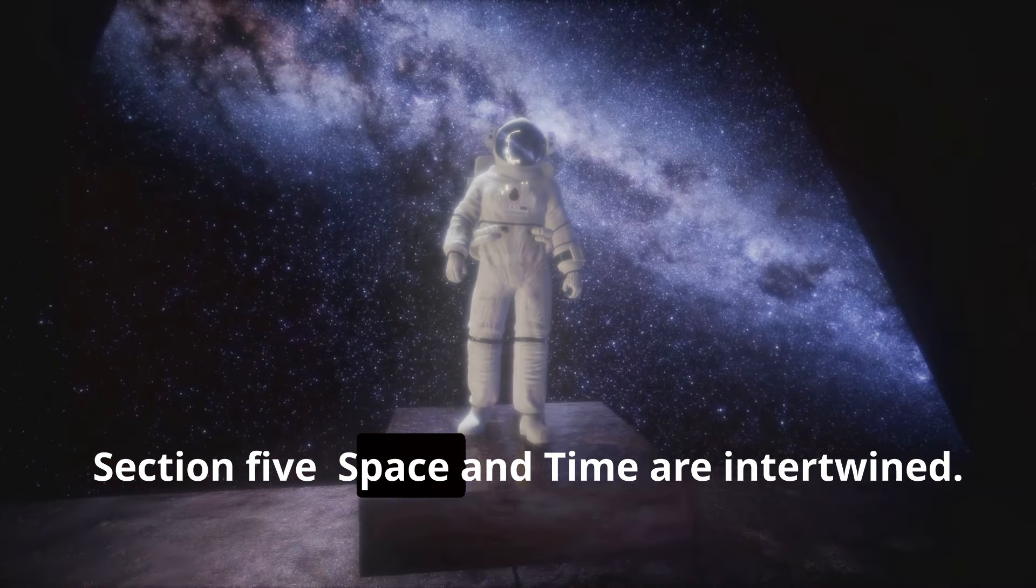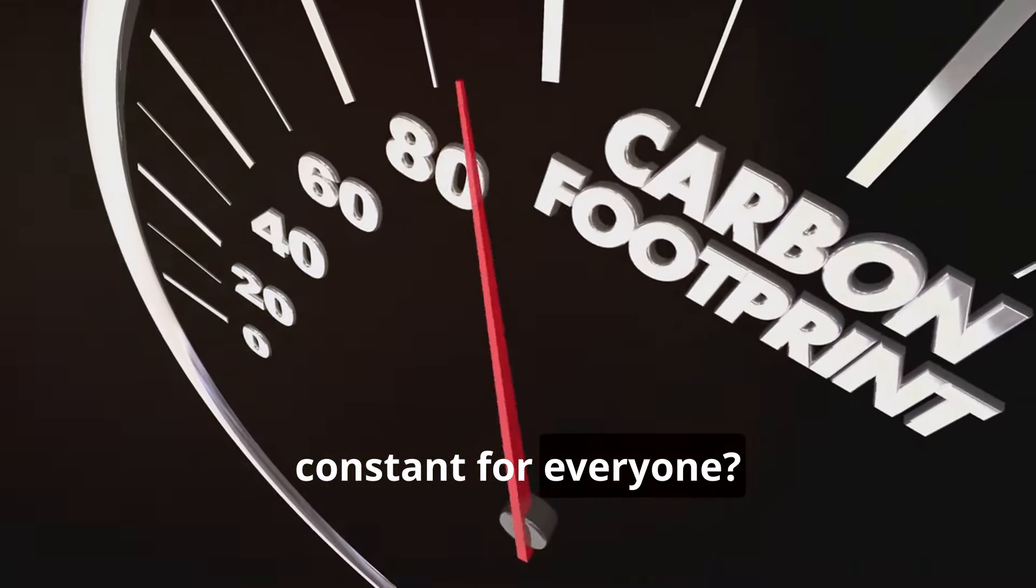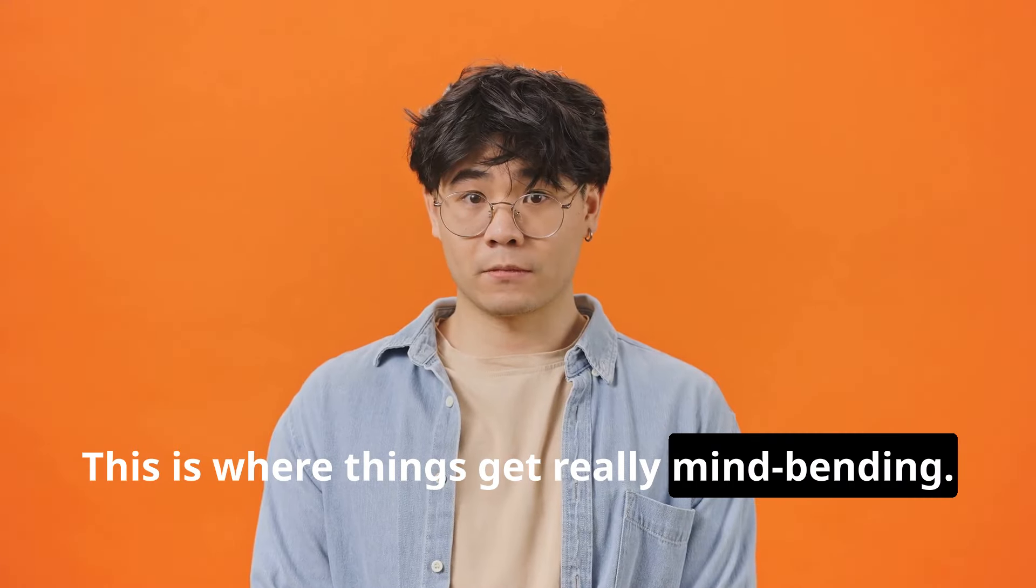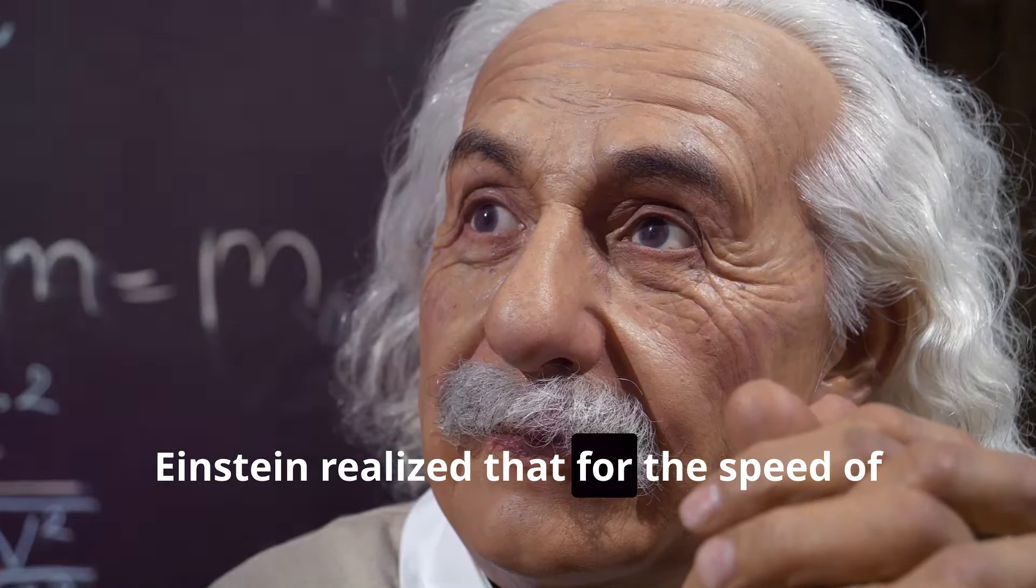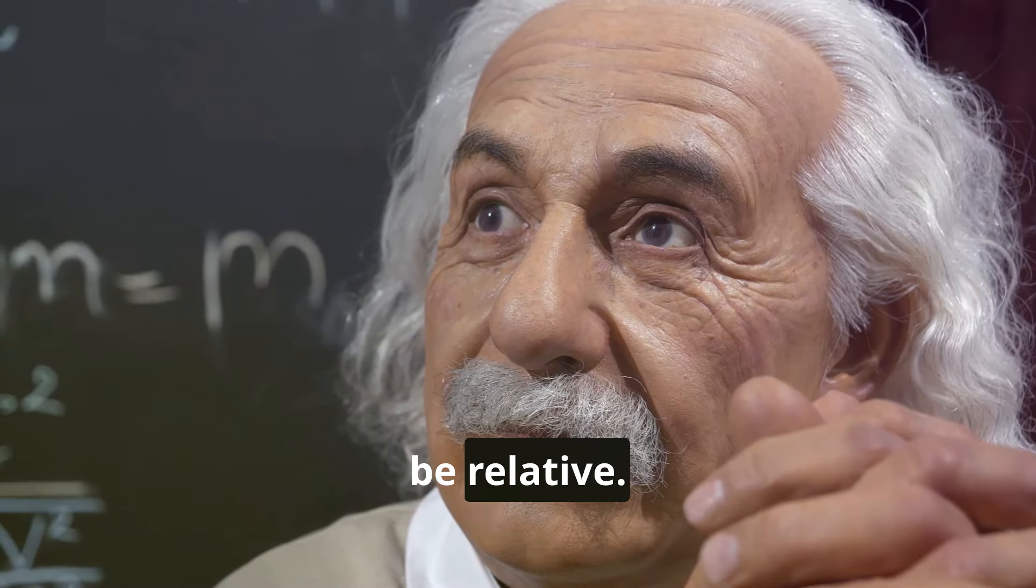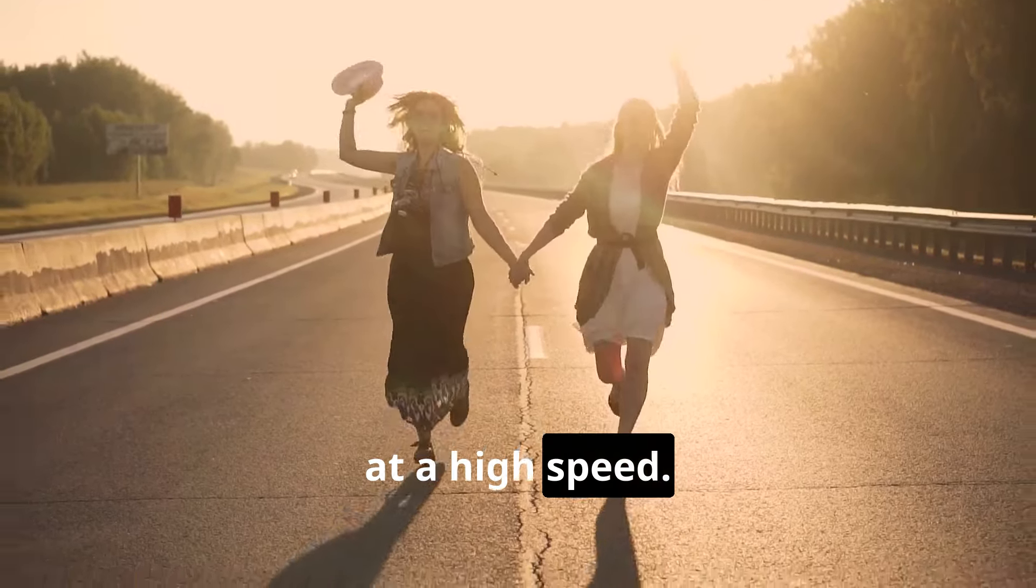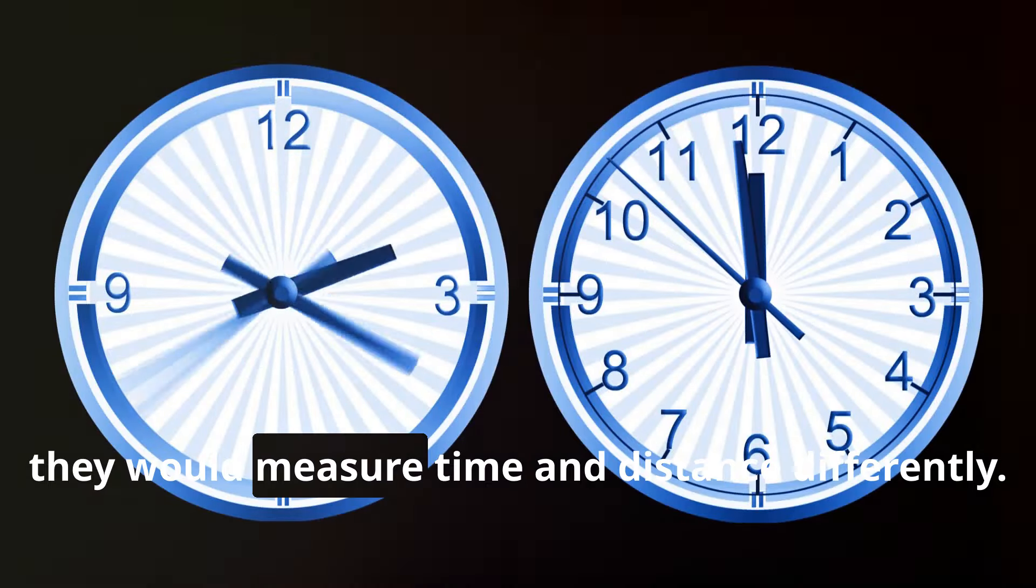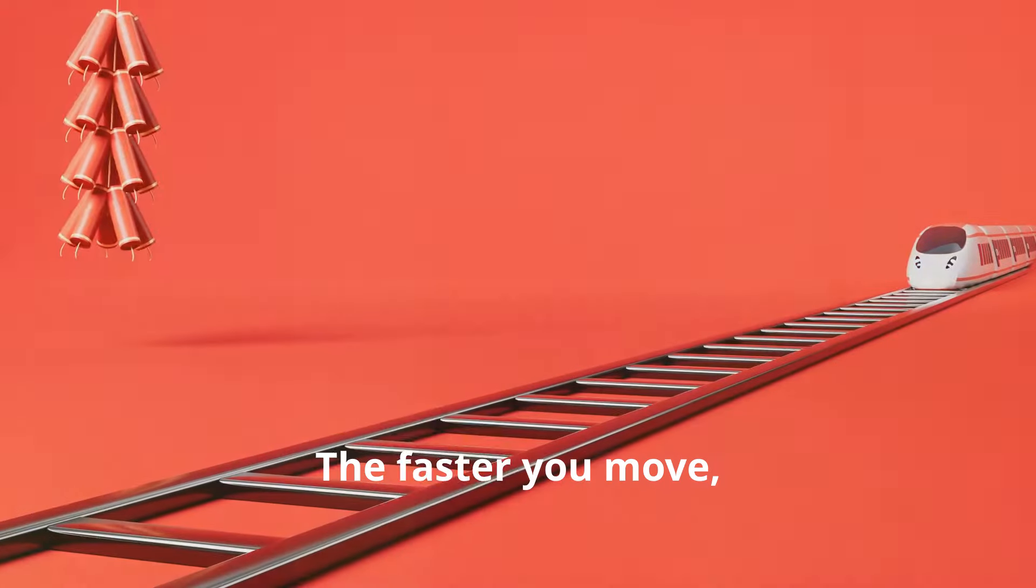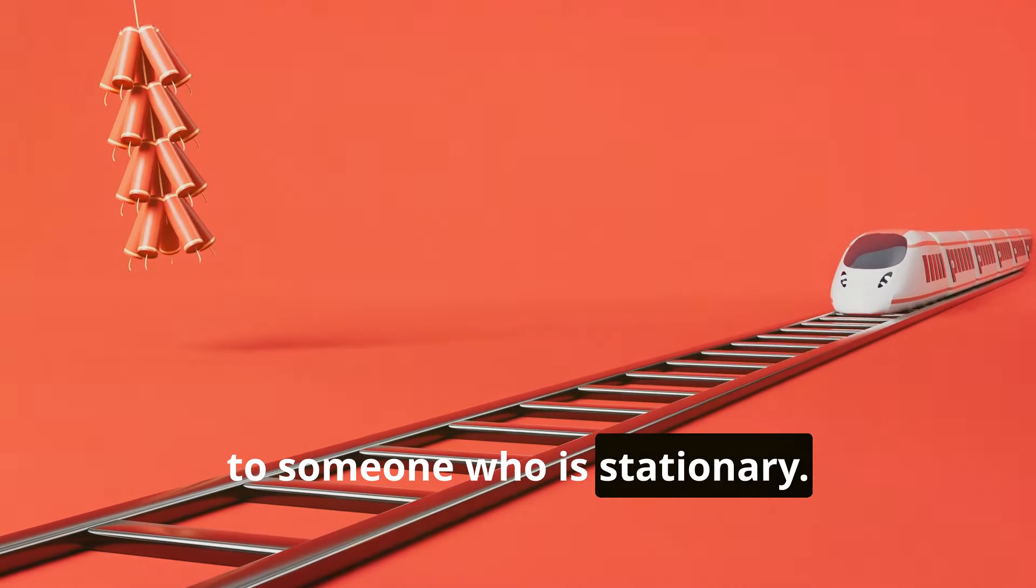But how can the speed of light be constant for everyone? This is where things get really mind-bending. Einstein realized that for the speed of light to be constant, our measurements of space and time must be relative. Imagine two observers: one standing still and the other moving at a high speed. According to Einstein, they would measure time and distance differently. The faster you move, the slower time passes for you relative to someone who is stationary.